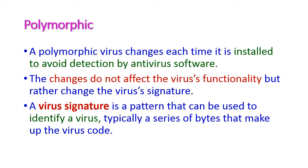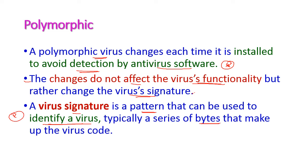The next one is polymorphic virus — this is a somewhat dangerous one because it changes each time it is installed to avoid detection by antivirus software. The changes do not affect the virus's functionality, but it will change its signature. The signature means the pattern — typically a series of bytes — that can be used to identify the virus. Every time the signature changes, so the antivirus program cannot detect the polymorphic virus.